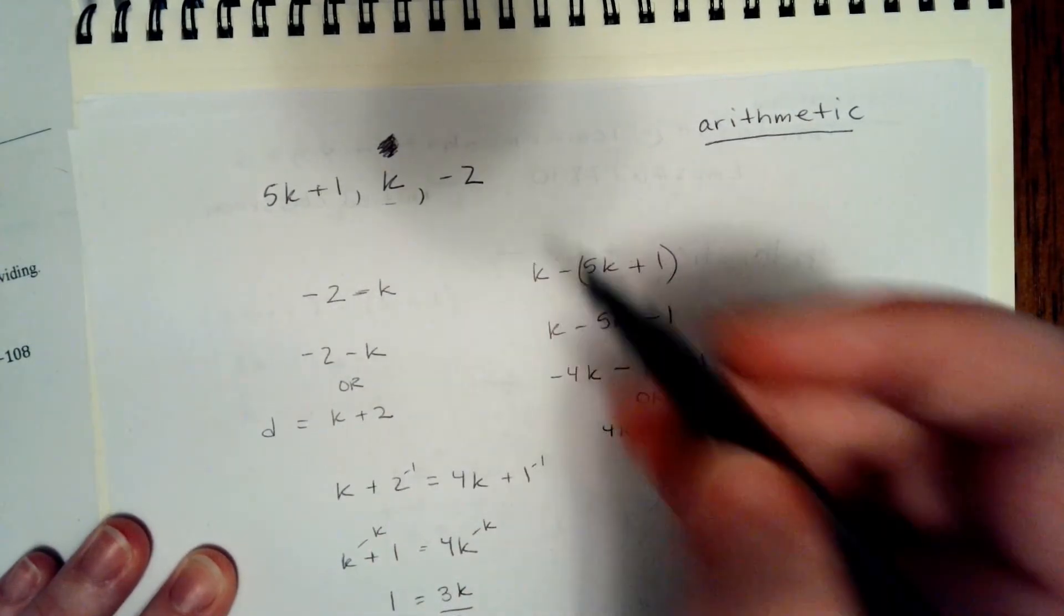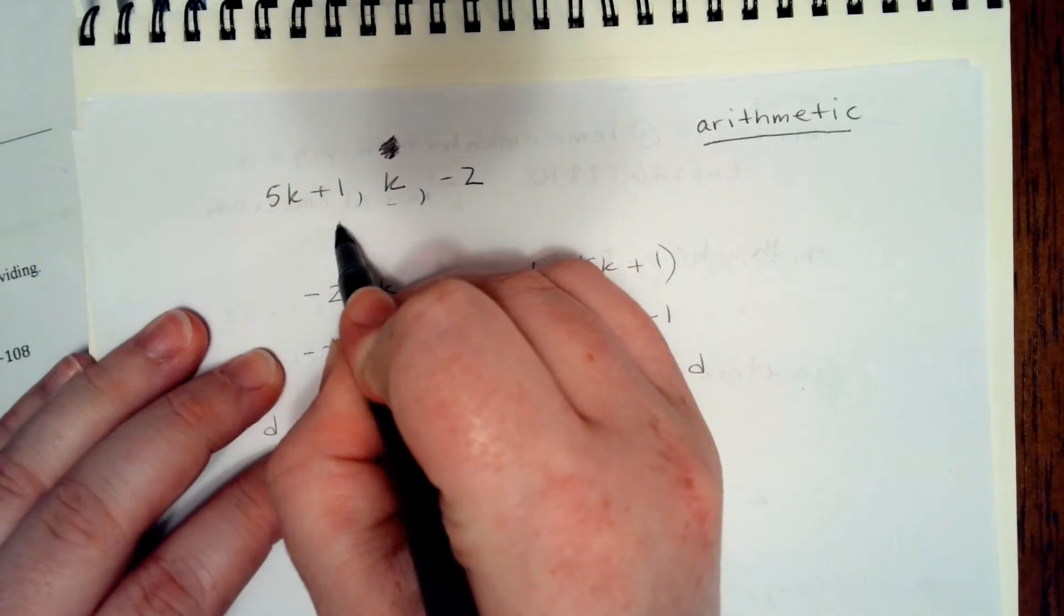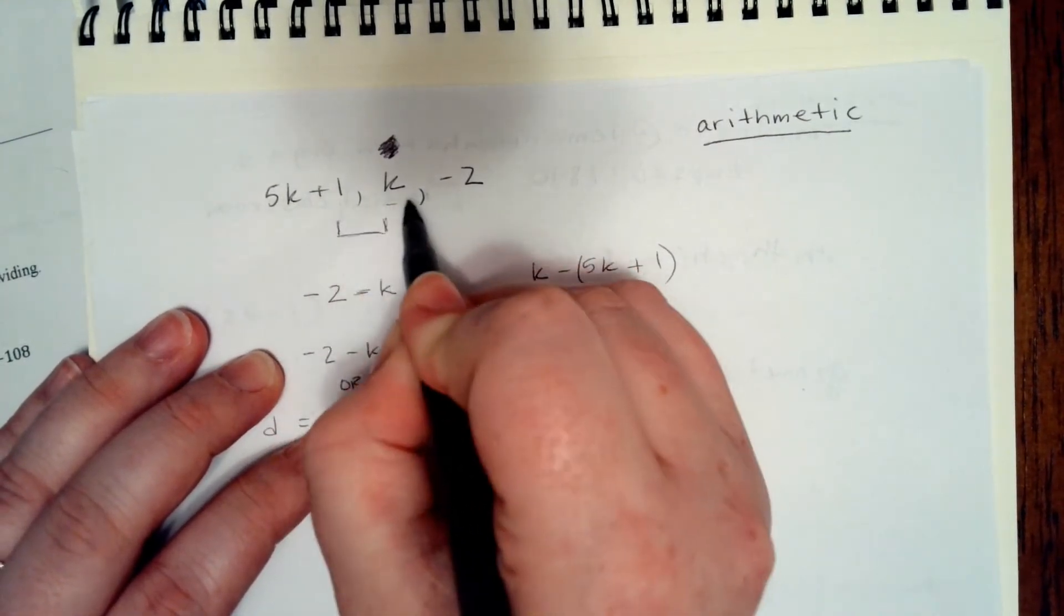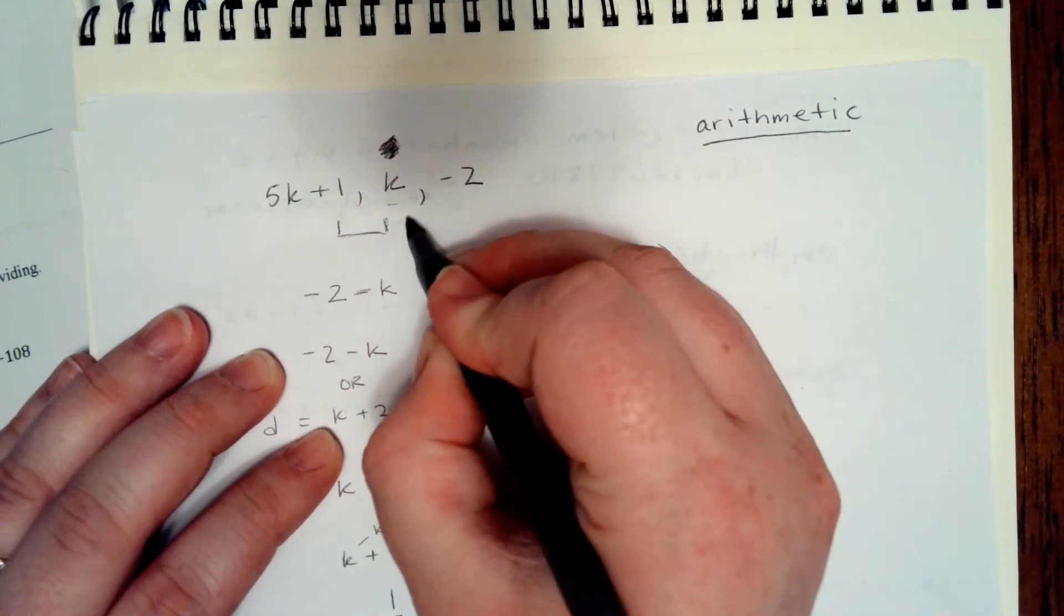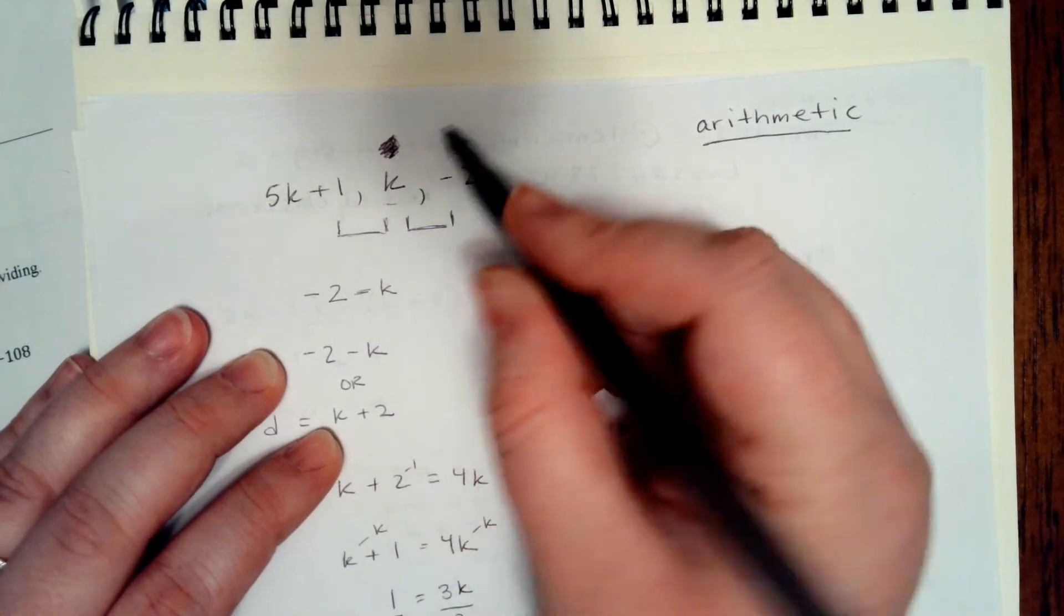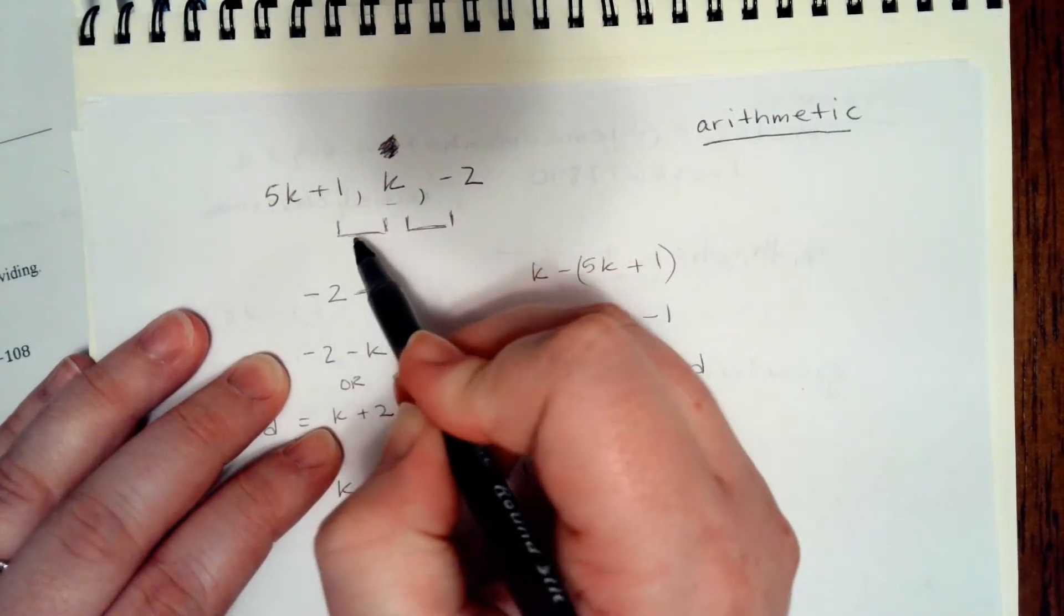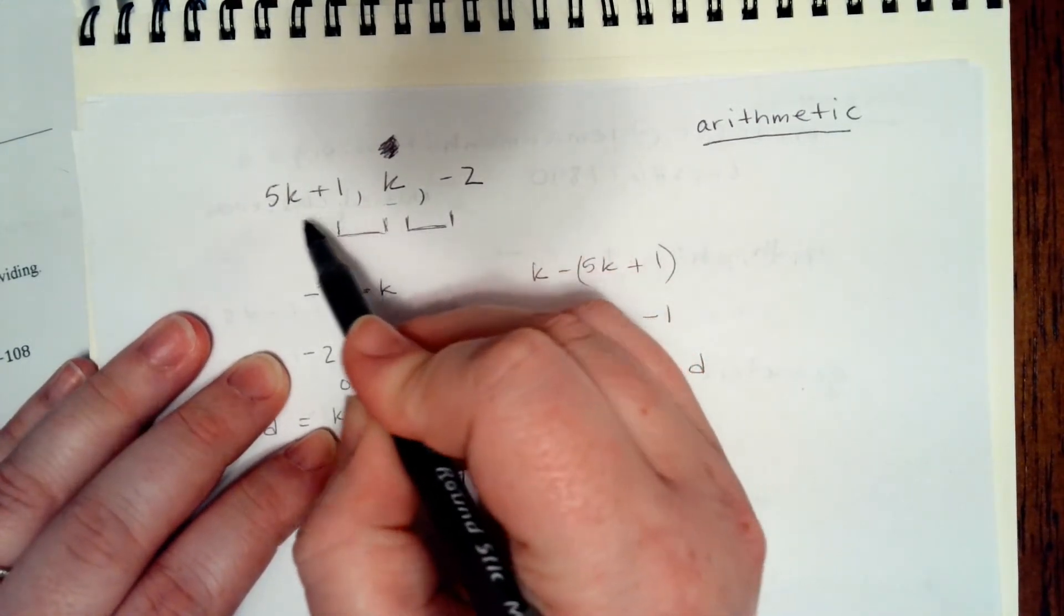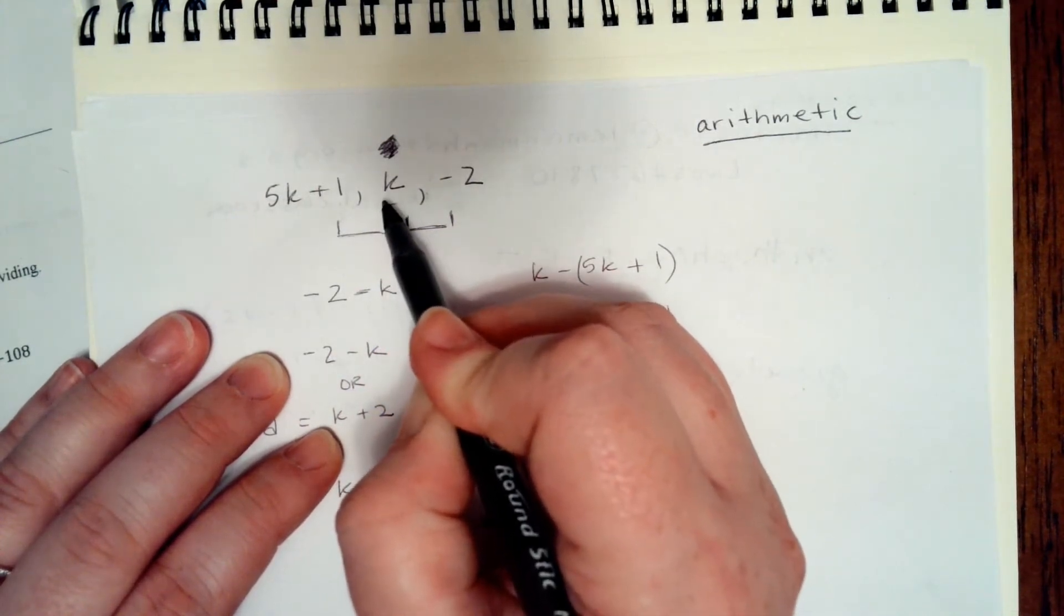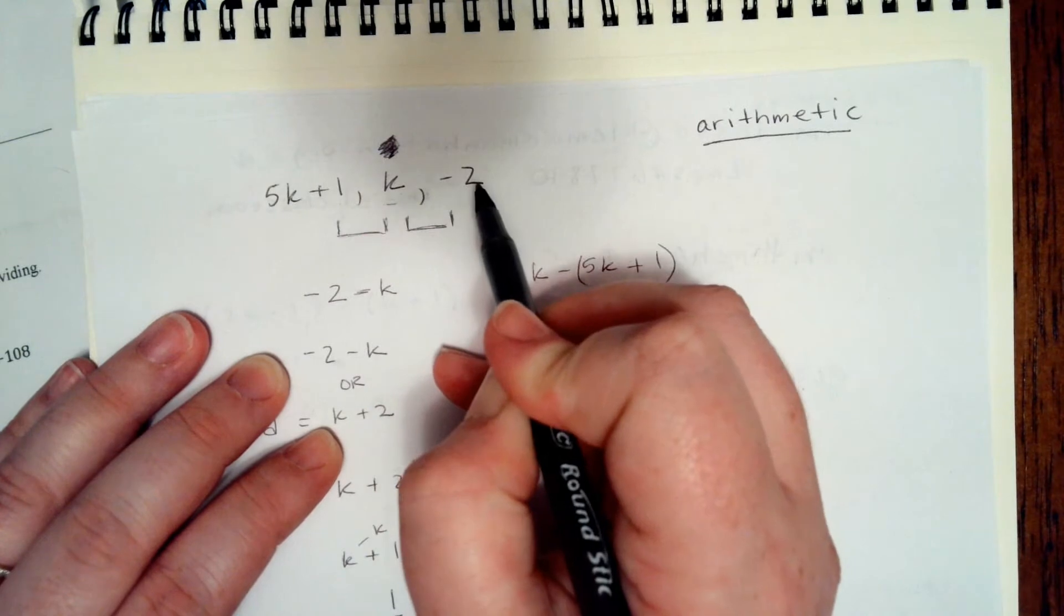So we know that to do this, the difference between 5k plus 1 and k is the same as the difference between k and negative 2. So if we were to put these on a number line, 5k plus 1 would be the same distance away from k as k would be from negative 2.